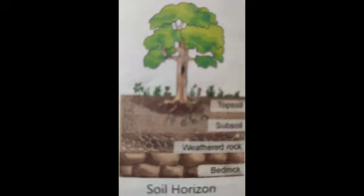Soil is formed by the weathering of rocks which takes place over millions of years. Hence soil formation is a slow process. Soil formation takes place in different layers namely topsoil, subsoil, partly weathered rock and parent rock. The topsoil is rich in humus and supports all types of vegetation. Subsoil consists of sand, silt, clay and holds moisture. Soil formation depends upon several factors like the nature of parent rock, the topography, and the climate. Parent rock determines the color, texture and mineral composition.